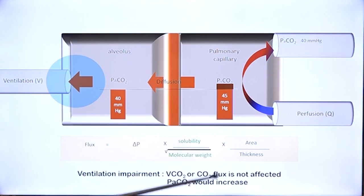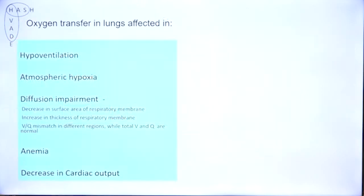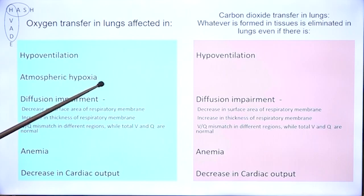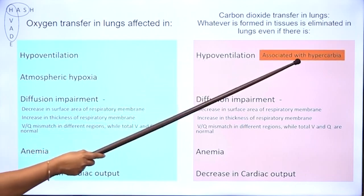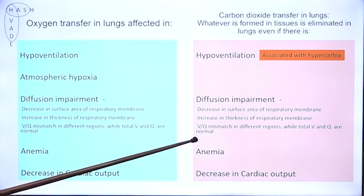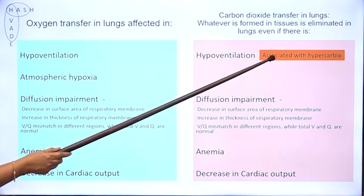In ventilation impairment, PaCO2 would increase; but in diffusion impairment, arterial PCO2 will be normal. Considering this in terms of the mnemonic: carbon dioxide transfer in the lungs is not affected — whatever CO2 is formed in the tissues will be eliminated — whether there is hypoventilation, diffusion impairment, anemia, or cardiac failure. However, in hypoventilation there will be hypercarbia — arterial PCO2 goes up — while in the other conditions arterial PCO2 will be normal. That is why diffusion impairment is called type 1 respiratory failure and hypoventilation type 2 respiratory failure, where both gases are affected.